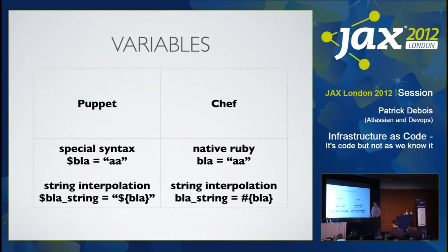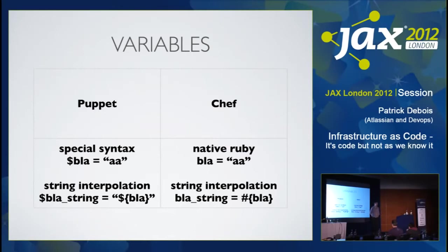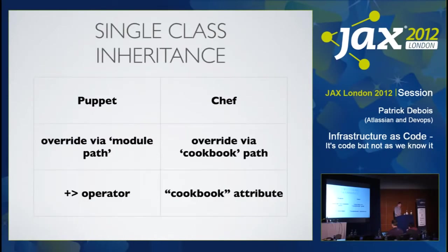Variables — very simple. Dollar blah equals a string, and if you want string interpolation they use dollar curly braces. In Chef it's just Ruby native — you use the hash and put that in. It's a small difference but it's one of those language constructs that come with the Ruby definition.